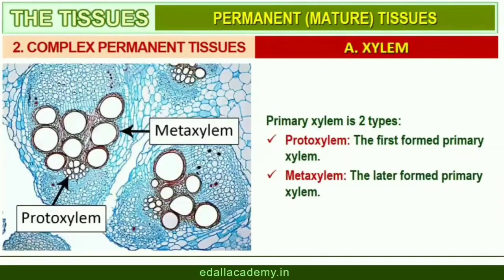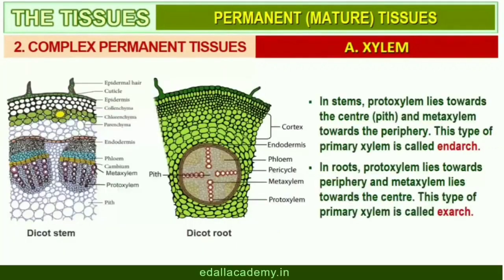Primary xylem is of two types: protoxylem and metaxylem. The first-formed primary xylem elements are called protoxylem and the later-formed primary xylem is called metaxylem. In stems, the protoxylem lies towards the center (pith) and the metaxylem lies towards the periphery of the organ. This type of primary xylem is called endarch. In roots, the protoxylem lies towards the periphery and metaxylem lies towards the center. Such arrangement of primary xylem is called exarch.